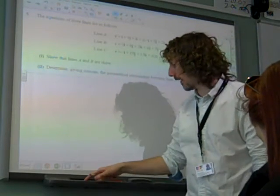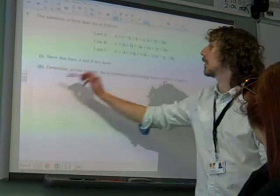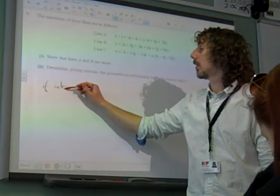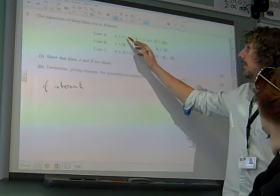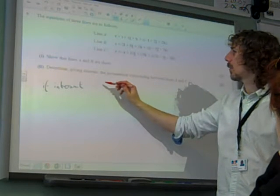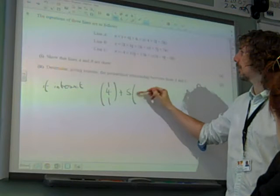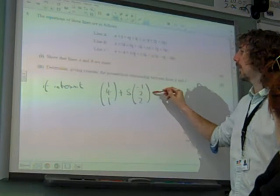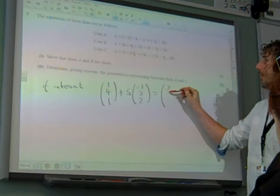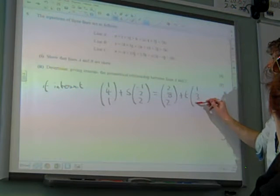So if they intersect, we're just looking at A and B remember. If they intersect then, actually do I want to write these out in a different way first? What we're saying is that 1, 4, 1 plus S times minus 1, 2, 2 is equal to 2, 8, 2 plus T times 1, 3, 5.